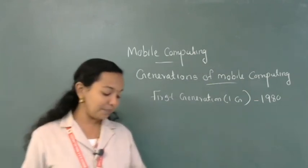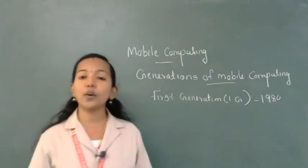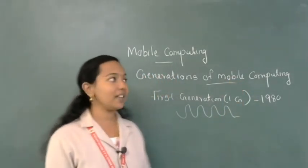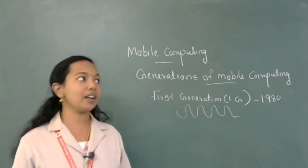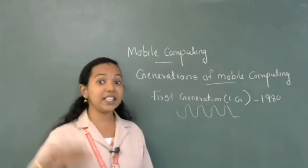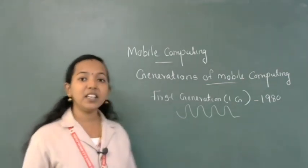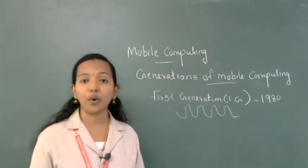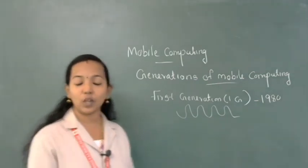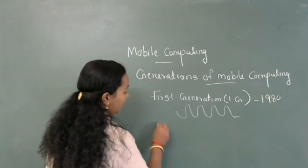First generation mobile phones were based on an analog system and provided only basic voice service using analog signals. Computers and mobile phones nowadays use digital format — digital data means 0 or 1 — which is why picture clarity is very high in digitalized format. First generation mobile phones introduced in 1980 used only analog signals, so only basic voice quality was available with no other special features.